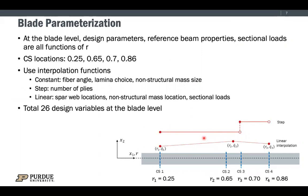At the blade level, the design parameters, reference beam properties, and sectional loads are all functions over radius of blades. For this example, we selected four cross-section locations, and they are shown on the bottom picture. We used the linear interpolation function to interpolate the spar web locations, non-structural mass location, and the sectional loads. We keep the fiber angle laminate choice and non-structural mass size as constants along the blade. The number of plies are kept as step function. Based on this setup, in total we have 26 design variables at the blade level.